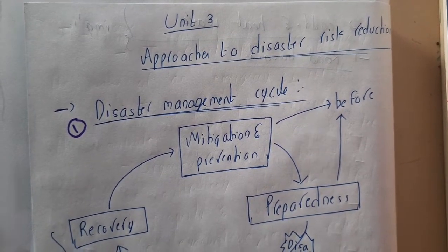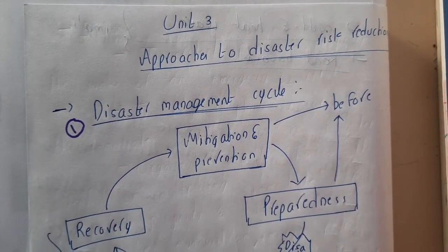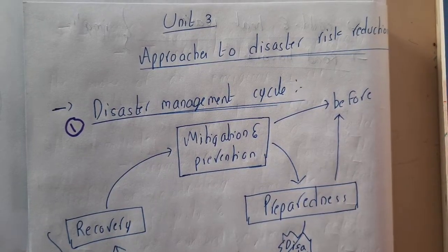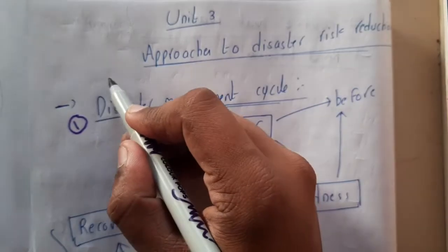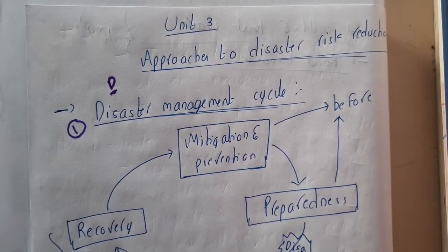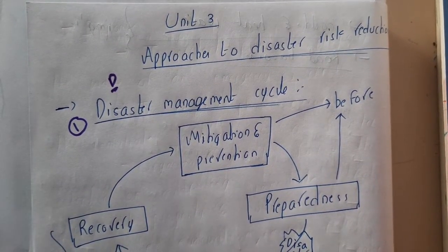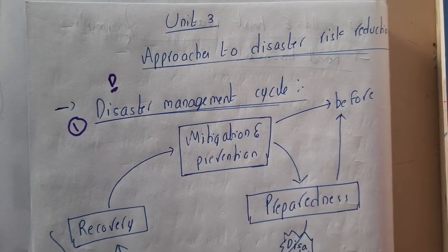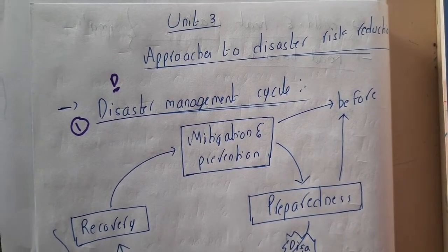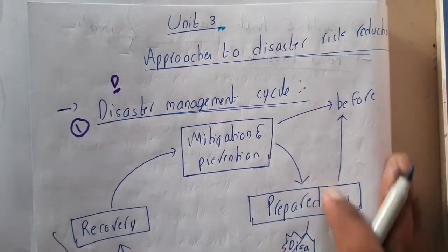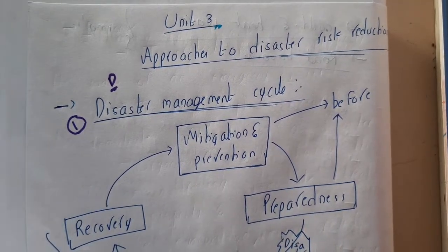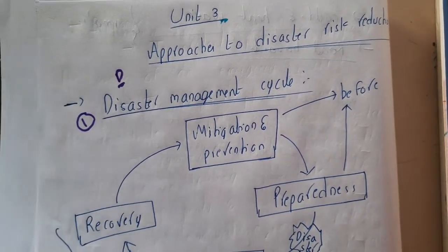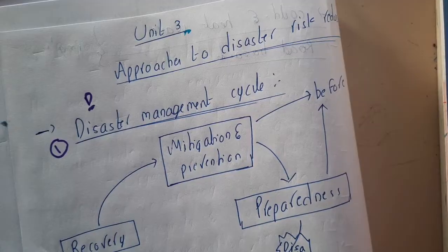Hello guys, we are back with our next set of lectures. In this lecture we are going to start the third unit of disaster management. In the first unit and second unit we discussed about multiple disasters. For any disaster there will be some management cycle or plans, and that is what we'll be discussing completely in this unit. So in this lecture let us go through the disaster management cycle.